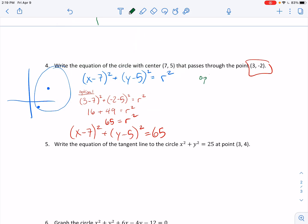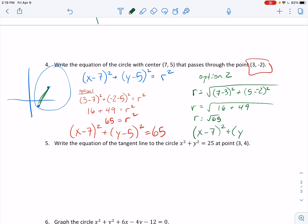Here's option two. Option two is to know that r is the distance between the point on the circle and the center. So I can just do the distance formula and say, okay, it's the square root of, well, I'm using those two points. It doesn't matter which one comes first. 7 minus 3 squared plus 5 minus a negative 2 squared. This gives me the square root, r is equal to the square root of 16 plus 49. r is equal to the square root of 65.